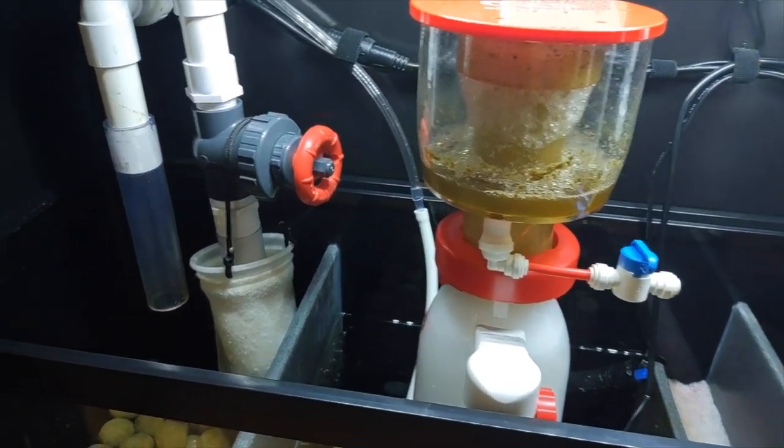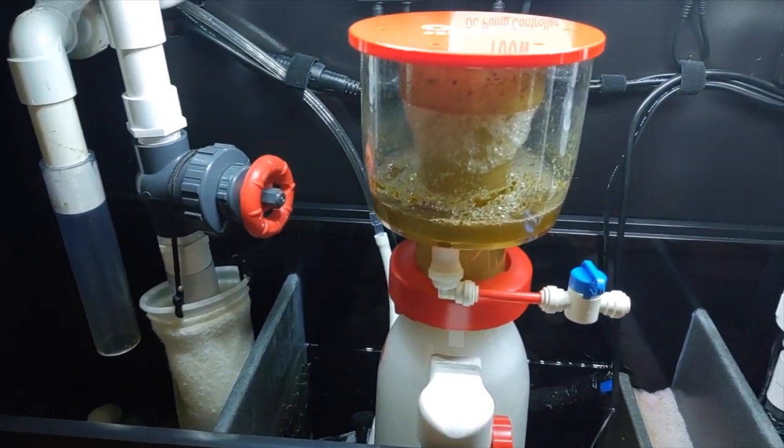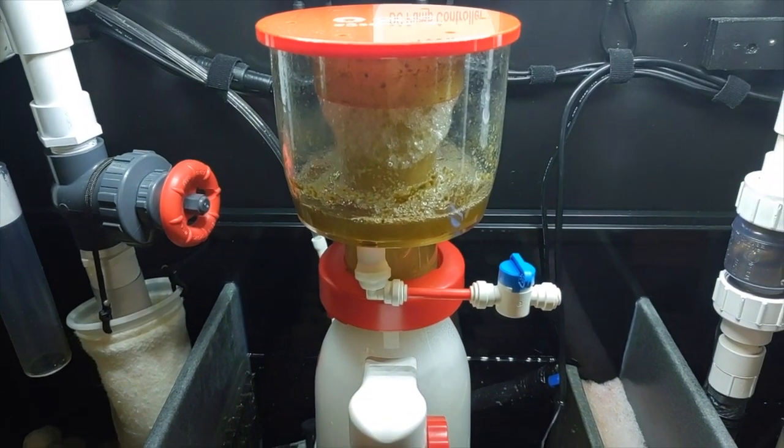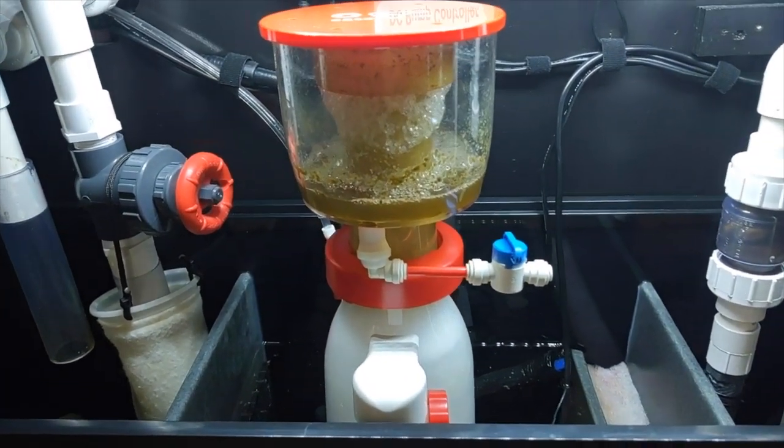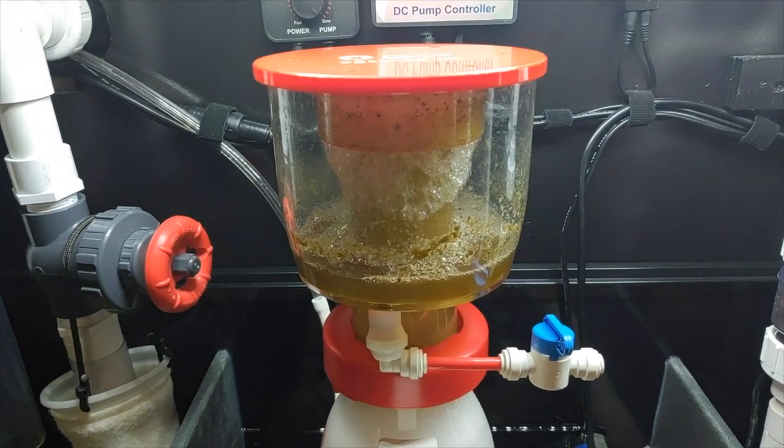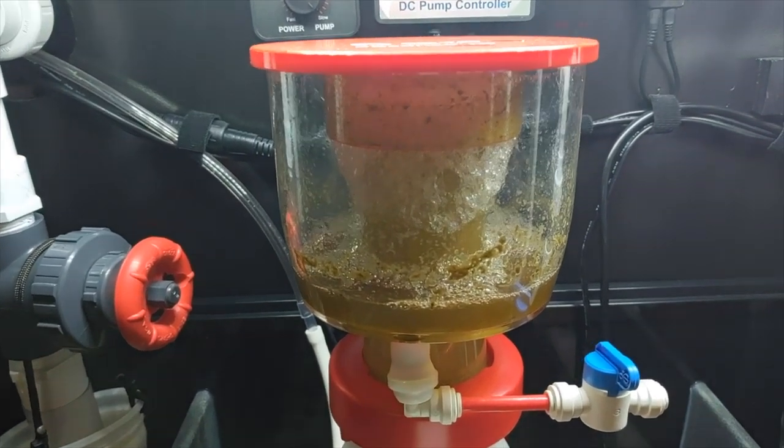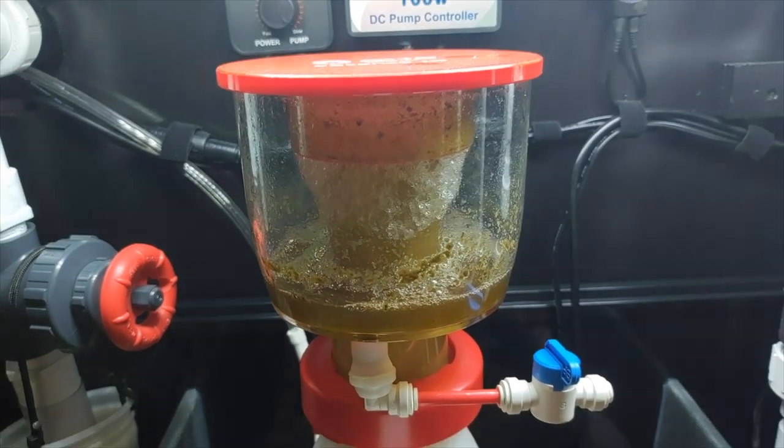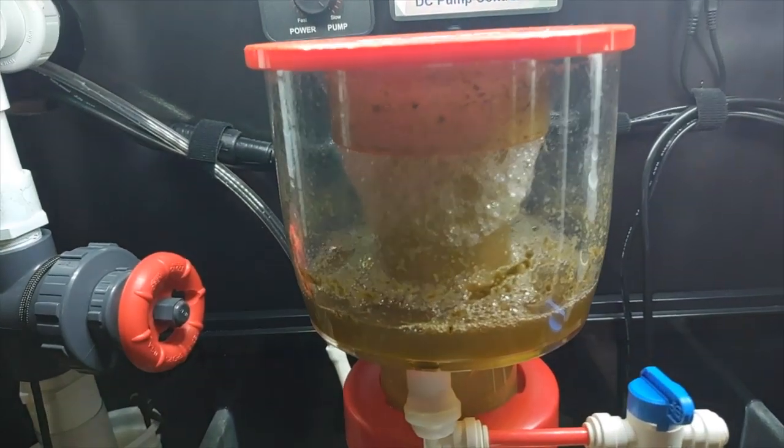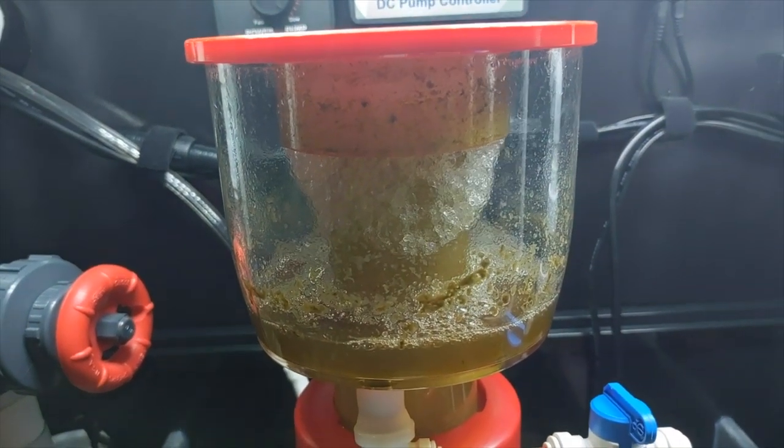Have you ever done anything to your system, like when you change your sump sock or heavily fed your corals or fish, or just changed something, and your skimmer went absolutely nuts and overflowed, and all this skimmate went back into your system? I'm going to show you how to avoid that from ever happening again.